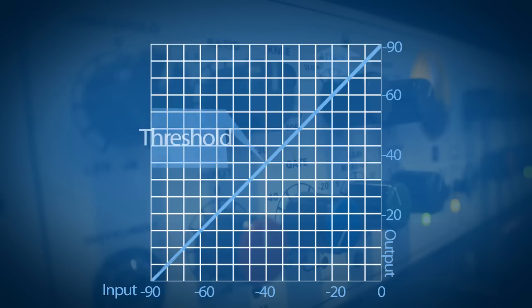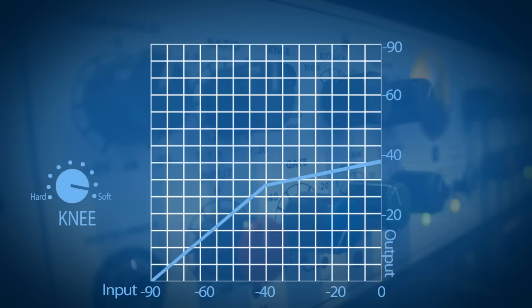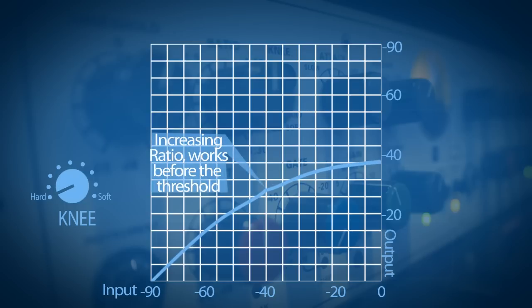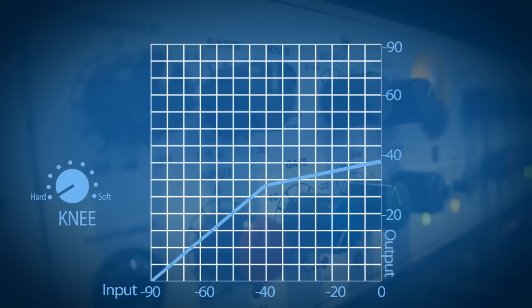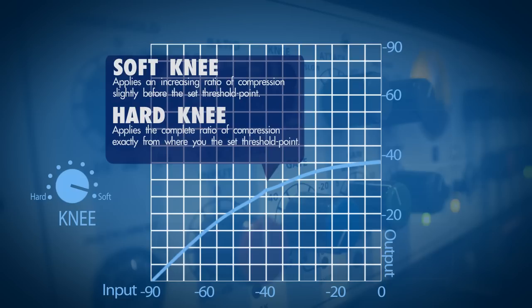One function I haven't mentioned yet is the knee setting that certain compressors have. A knee setting lets you choose between soft knee and hard knee — sometimes there's even a slider between the two. The difference is that soft knee applies an increasing ratio that kicks in a little before the threshold, gently applying the compression. With hard knee, whenever you reach the threshold it applies the ratio exactly as you've set it. The hard knee effect is more noticeable and you can really hear the compressor start to work, as opposed to soft knee which gently increases the amount of compression.